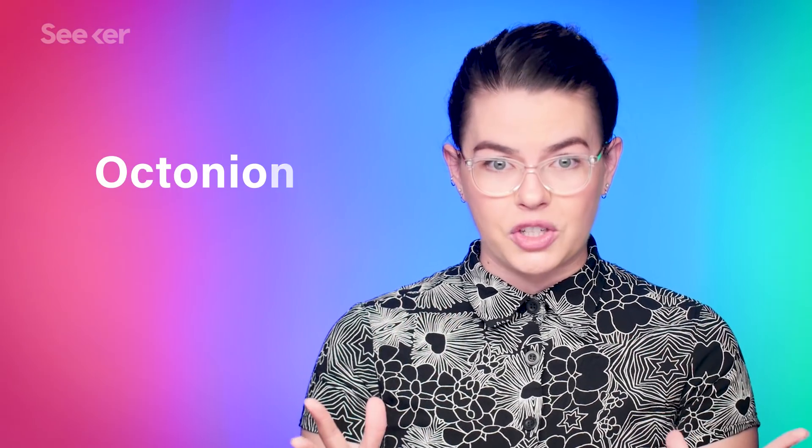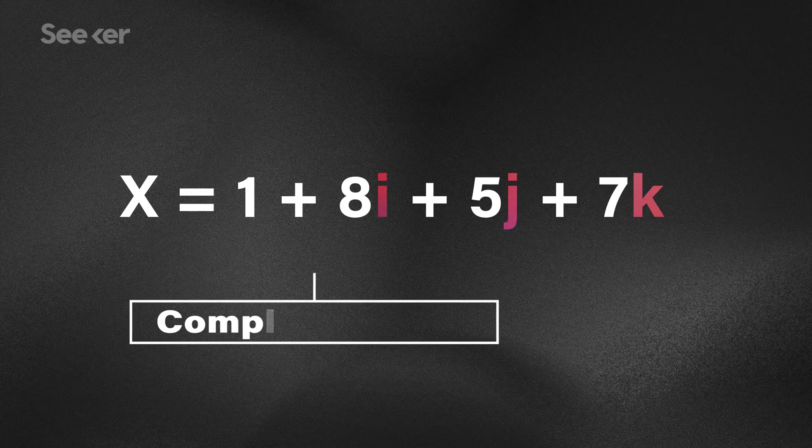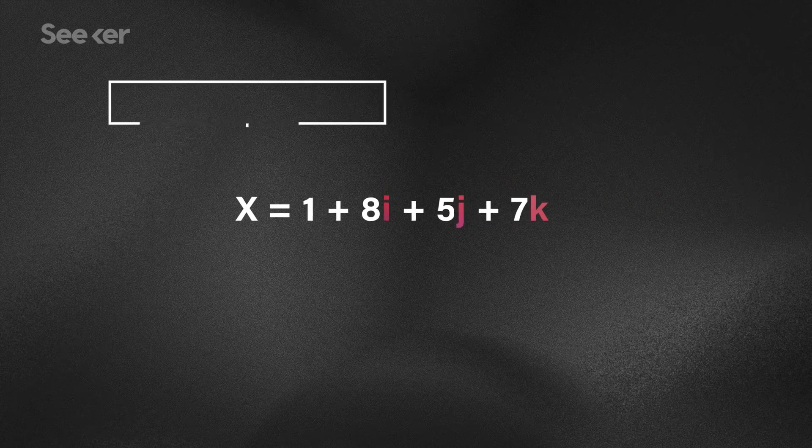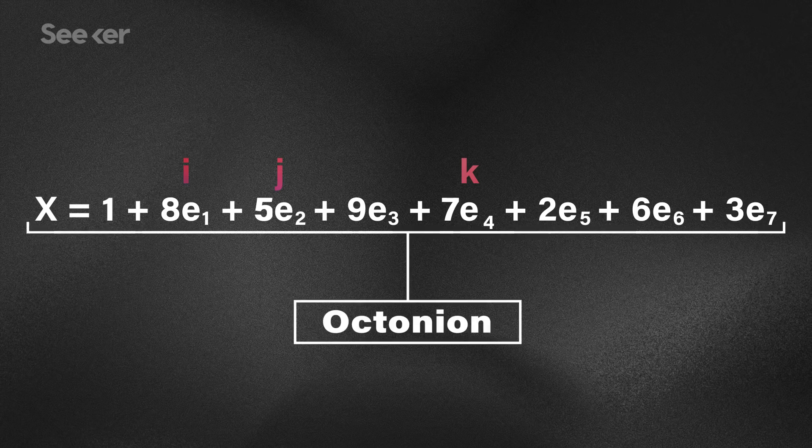Strap in, because here come the octonions — that's the next step up. Because of some complex mathematical rules, these kinds of numbers come only in dimensions 1, 2, 4, and 8. So after the quaternions, we make the jump to octonions: numbers that help us navigate 8 dimensions. That's the quaternion, which contains complex numbers which contain real numbers, plus 4 new units. E1, E2, and E4 are one way that i, j, and k from the quaternions are represented in the octonion system. These 8 dimensions don't have to be spatial — they can represent characteristics of particle behavior, like how certain particles behave under the strong force, making octonions really useful for quantum calculations.